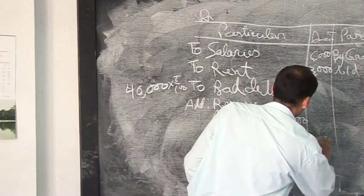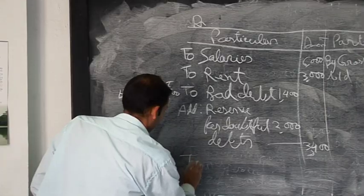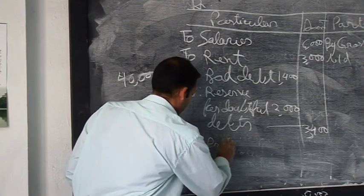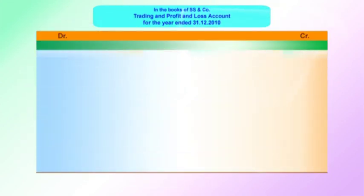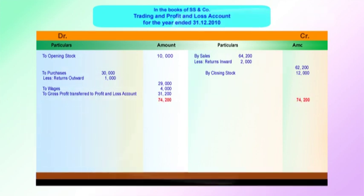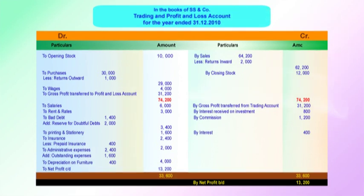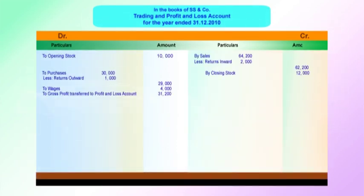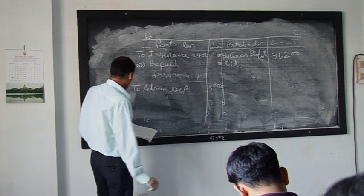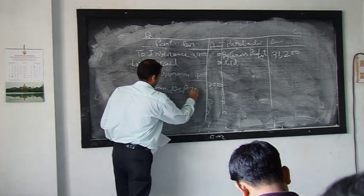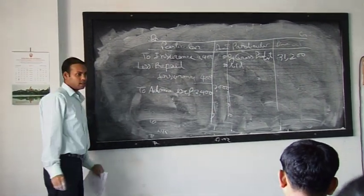The total amount for bad debts and provision for doubtful debts is 3,400. Next item: printing and stationery — the trial balance figure is 1,600, no adjustment, so 1,600. Then insurance: the trial balance figure is 2,400, but there is an adjustment — prepaid insurance is 400. So insurance expense is 2,400 less 400 equals 2,000. Next: administrative expenses — the trial balance figure is 2,400.